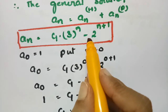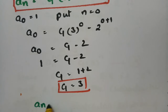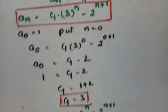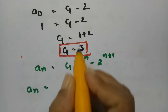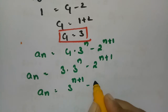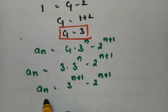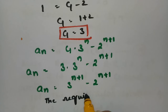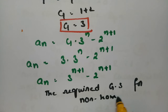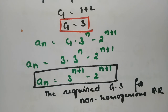Substituting c1 = 3 into the general solution: a_n = 3·3^n - 2^{n+1} = 3^{n+1} - 2^{n+1}. This is the required general solution for the given non-homogeneous recurrence relation.